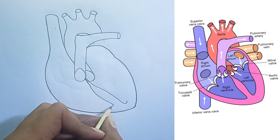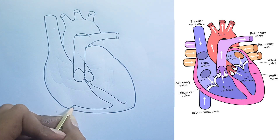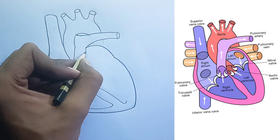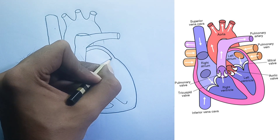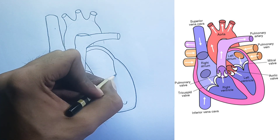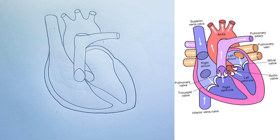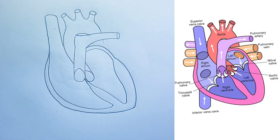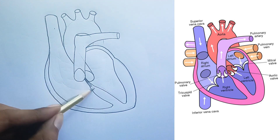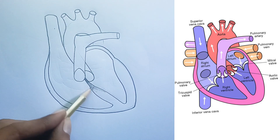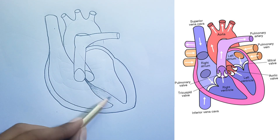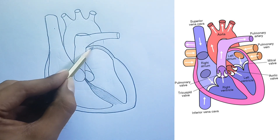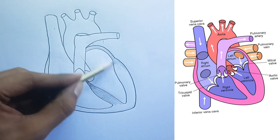Blood flow, as indicated by arrows. Deoxygenated blood from the body enters the right atrium via the superior and inferior vena cava. From the right atrium, blood passes through the tricuspid valve into the right ventricle. The right ventricle contracts, pumping the blood through the pulmonary valve into the pulmonary artery, which carries it to the lungs to pick up oxygen and release carbon dioxide.